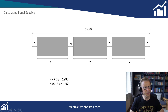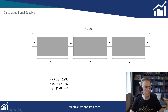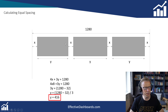So if we want the distance X to be 8, we can plug this into the equation. That is 4 times 8 plus 3 times Y equals 1,280. Then we just multiply that out: 3Y equals 1,280 minus 32 — because we're taking the 32 across to the other side of the equation. That 4 times 8 is 32. Finally, we divide: 1,280 minus 32, divided by 3. That gives us the width we need to make each visual in order to make sure these spaces are all 8. So it's 416 — fairly straightforward. Let's go back into Power BI and make those changes.